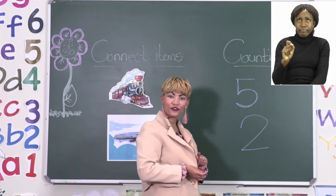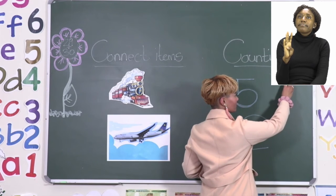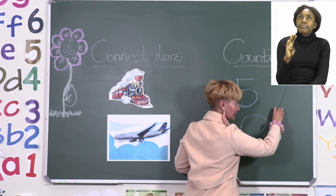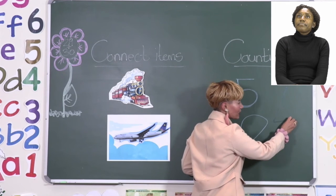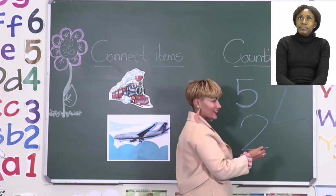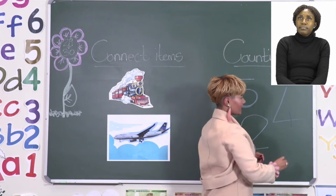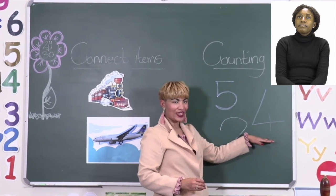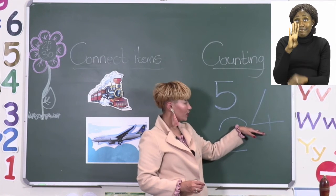How do you write the number four? You start with your pencil, make a little skew line down, then make a smaller line to the other side, and then draw another short line through your bottom line. This is what your number four looks like.